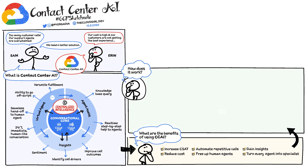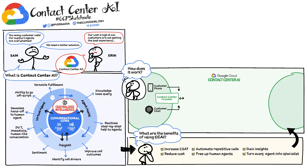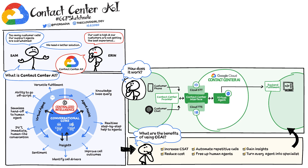When a user calls or initiates a chat, the Contact Center provider connects them to Google Cloud's Contact Center AI. The virtual agent understands the user's intent and fulfills the request by connecting to the backend. If the call is handled by a human agent, they see the transcript of the interaction with the virtual agent and get feedback from the knowledge base to respond to queries in real-time.